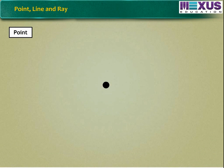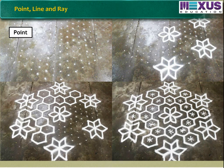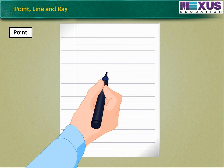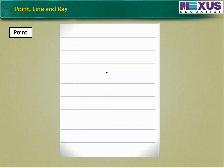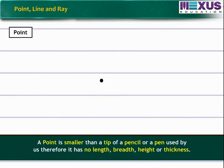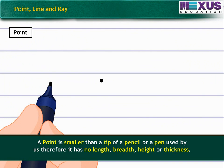Point or a dot is not new to us. You must have seen Rangoli design drawn using points. As soon as a pencil touches the paper, a point or dot is formed. A point is smaller than a tip of a pencil or a pen used by us.